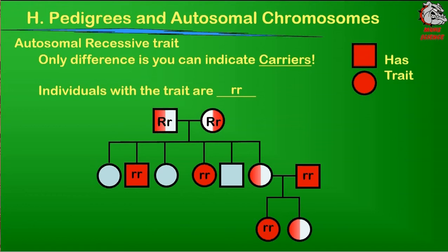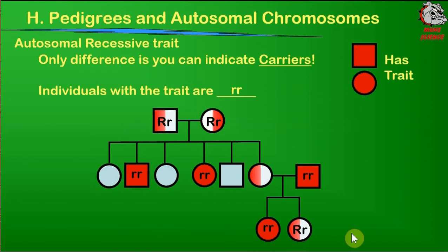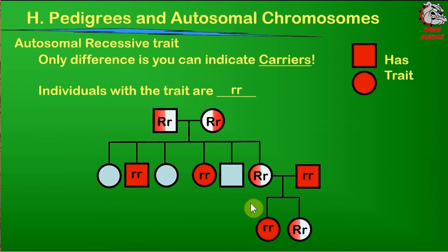The recessive trait is not shown in the parents but will show up every once in a while. Looking at this individual at the very bottom: they have to get a lowercase r from the father, but they are not showing the trait and I've indicated them as a carrier. So this person must be big R, lowercase r, because they do not have the recessive trait — they have to have the big R, and they can only get a lowercase r from the father. That means this mother also has a big R, because that's the only way offspring can inherit a capital R. And since this daughter is lowercase r, lowercase r, she has to have a lowercase r from the mother — so the mother is a carrier of that trait.